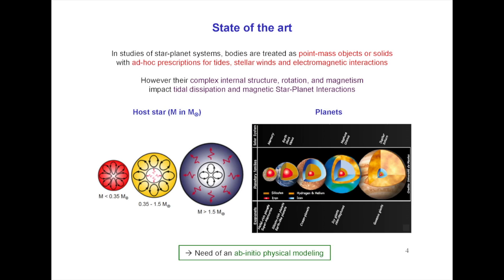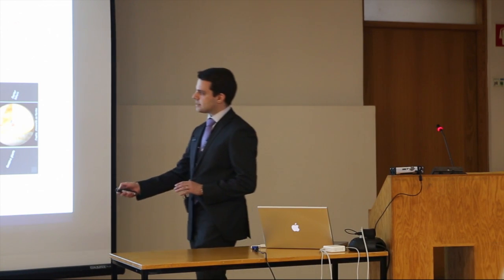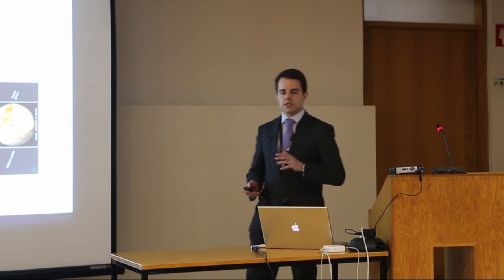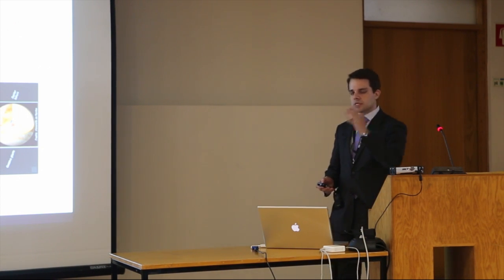In many studies, bodies are treated as point-mass objects or solids, and we adopt prescriptions for tides, winds, or electromagnetic interaction. But if you look at the different bodies — here you have the stars, here you have the planets — all of them have very different, strongly different structures. For example, very low-mass stars are completely convective; the Sun has an external convective envelope and a radiative core inside; higher-mass stars revert this internal structure with a radiative exterior and convective interior.